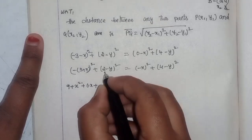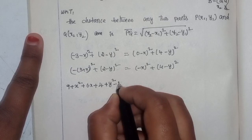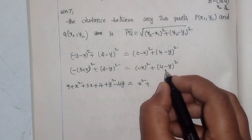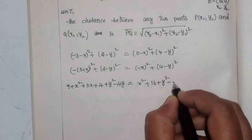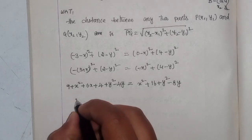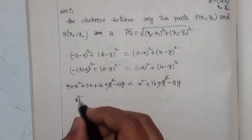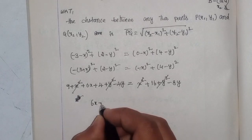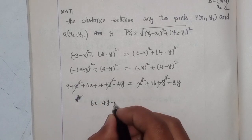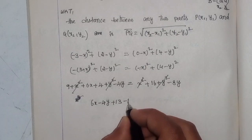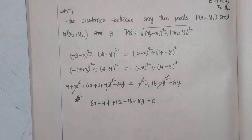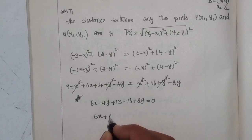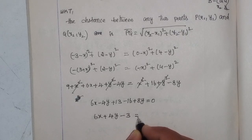Expanding using (a + b)² = a² + 2ab + b²: (3 + x)² gives 9 + 6x + x². Using (a - b)² = a² - 2ab + b²: (2 - y)² gives 4 - 4y + y². The x² and y² terms cancel on both sides. We get 6x - 4y + 9 + 4 equals -8y + 16, which simplifies to 6x + 4y + 13 - 16 plus 8y - 4y equals 0.